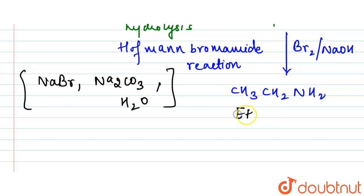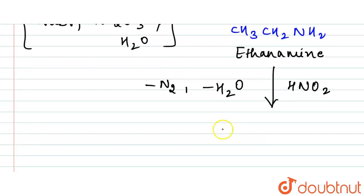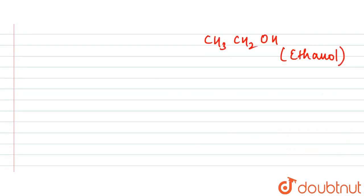So now in the next step we will have the reaction with nitrous acid. So here when we have the reaction with nitrous acid, we have the removal of N2 and H2O, and here we get the formation of ethanol. This is our ethanol.